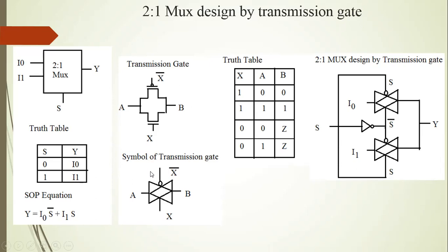The symbol of the transmission gate: A input on one side, B output on the other, X input on the gate of the N-MOS, and X-bar input applied on the gate of the P-MOS transistor. For the 2-to-1 MUX symbol: i0 and i1 are the two inputs, with one select line for a 2-input, 1-output MUX.